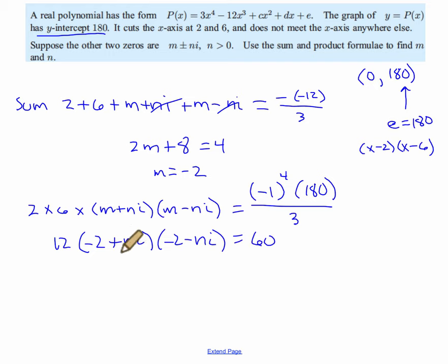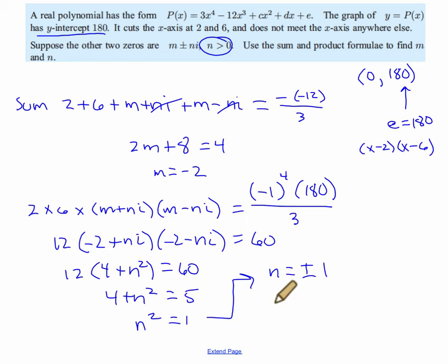Okay, so we have a plus b times a minus b and they're complex conjugates, so that's going to be 12 times 4 plus n squared is equal to 60. 4 plus n squared is equal to 5. N squared equals 1. Let me move over here. N equals plus or minus 1, but it tells us here that n is greater than 0, so we know that n is equal to 1.